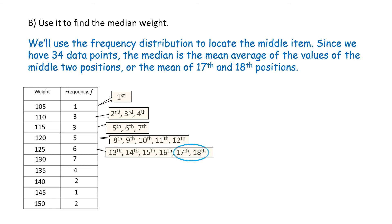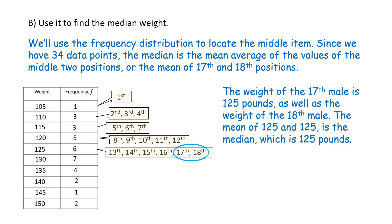The 17th and 18th positions give us our median when we take the mean of those two. The weight of the 17th male is 125 pounds, as well as the weight of the 18th male. So the mean of 125 and 125 is the median, which is 125 pounds. Let's notice that the mean and median differ by less than 2 pounds.